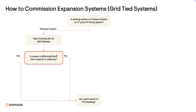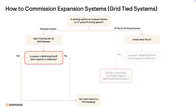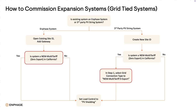Back to the top of the decision tree: if the system is a third-party PV string system, you must create a new Site ID. If the system is NEM multi-tariff zero export in California, set the grid connection type in step 1 to NEM multi-tariff zero export. Then set load control to PV shedding, regardless of whether or not it's a NEM multi-tariff system.